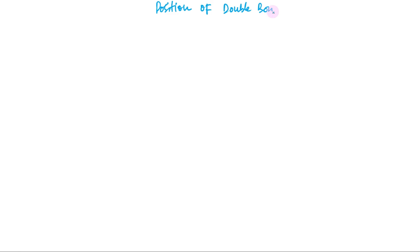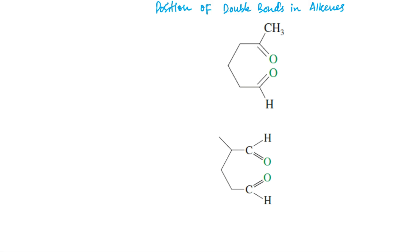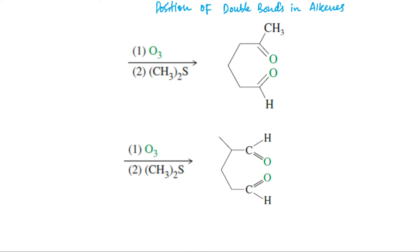One of the most common uses of ozonolysis has been for determining the positions of double bonds in alkenes. For example, if we were uncertain of the position of the methyl group in a methylcyclopentene, the products of ozonolysis reduction would confirm the structure of the original alkene. If we check the product formed after ozonolysis reduction, we can see that both carbonyl groups are attached to the same molecule, which means it is formed from a cyclic alkene.